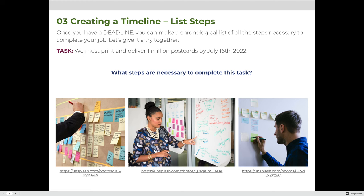To do that, we are going to establish a list of steps that are necessary to complete the given task. In this case, our task is to print and deliver 1 million postcards by July 16th, 2022. You may not be as familiar with the printing industry as I am, so as we're going through this, think about a task that you would have to complete in your own industry or for your boss or client.